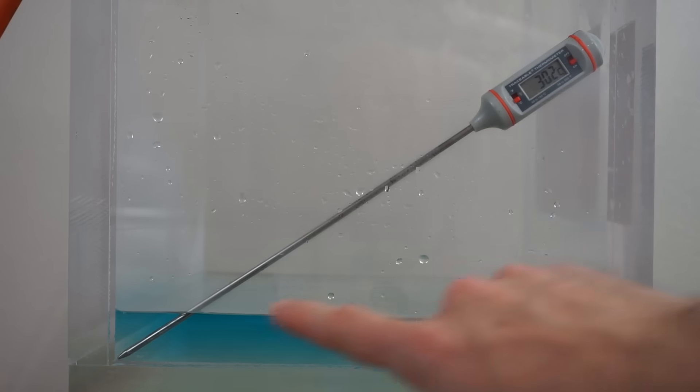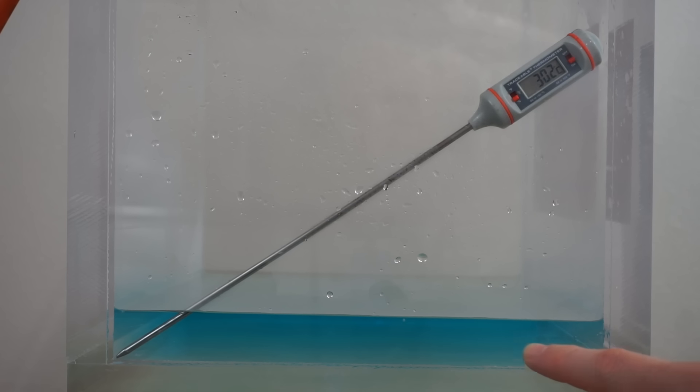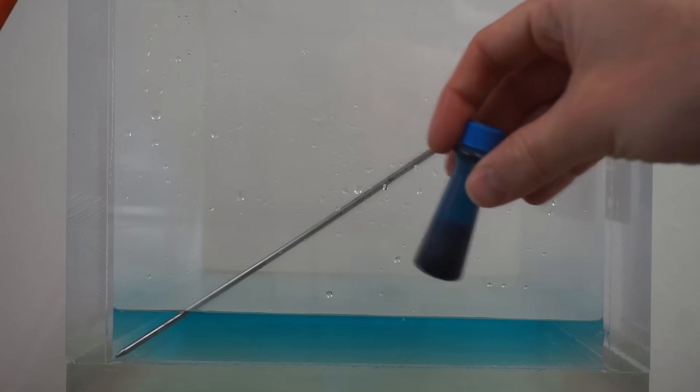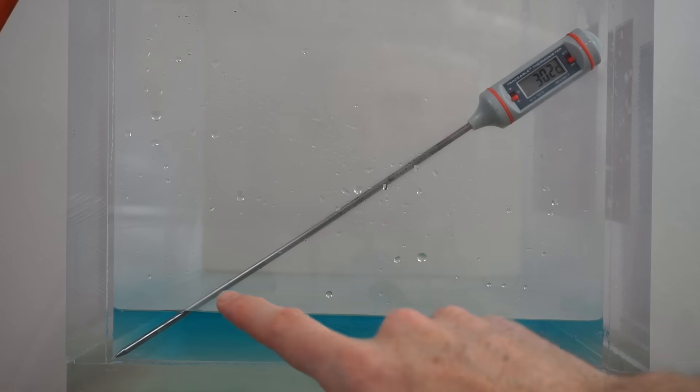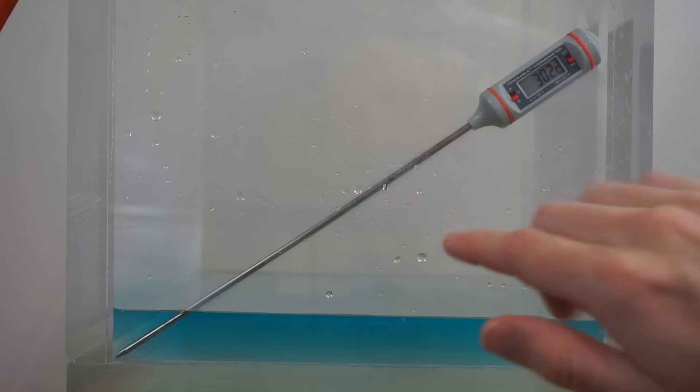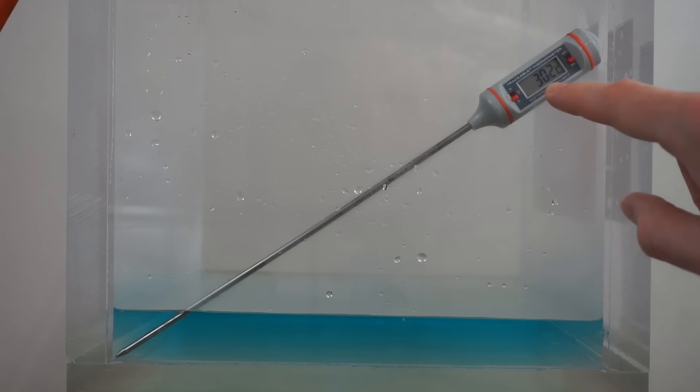So to show you what I mean, I have some water in my vacuum chamber here. I just dropped in some blue food coloring so that you can see the water easier, it's kind of hard to see with a white background. But I have a thermometer in here also. It's at 30 degrees Celsius. So just a little bit warm water, around 85 degrees Fahrenheit.